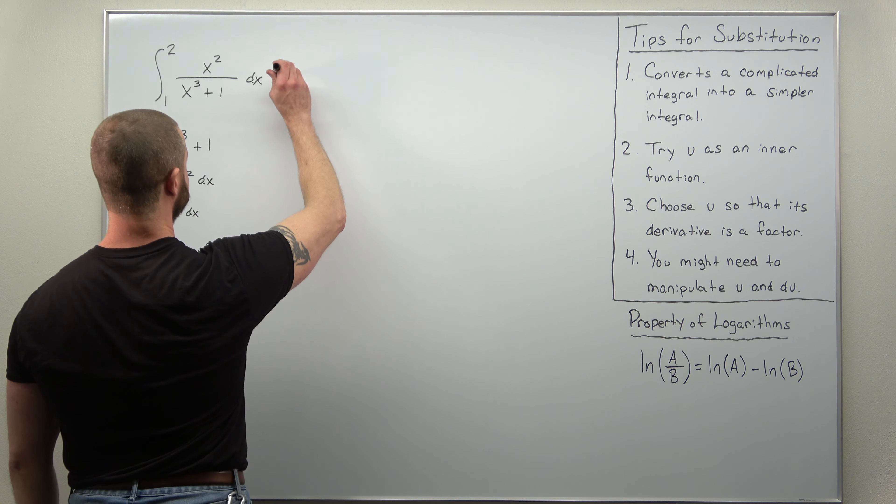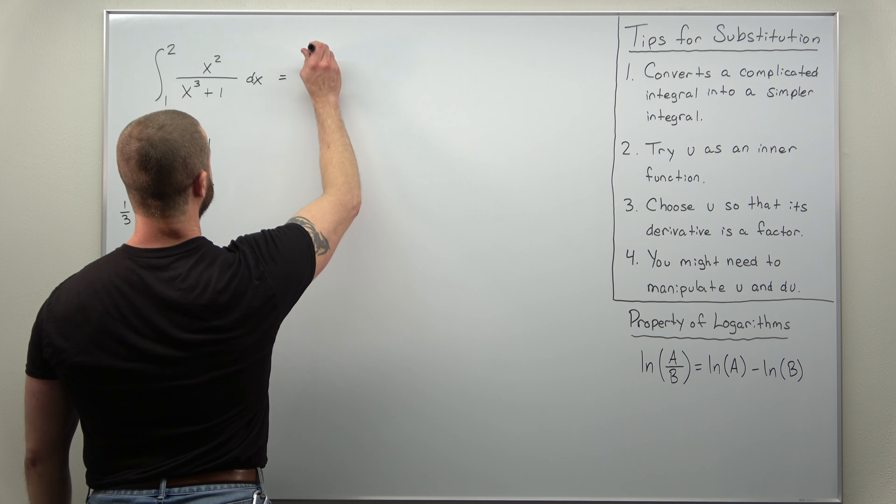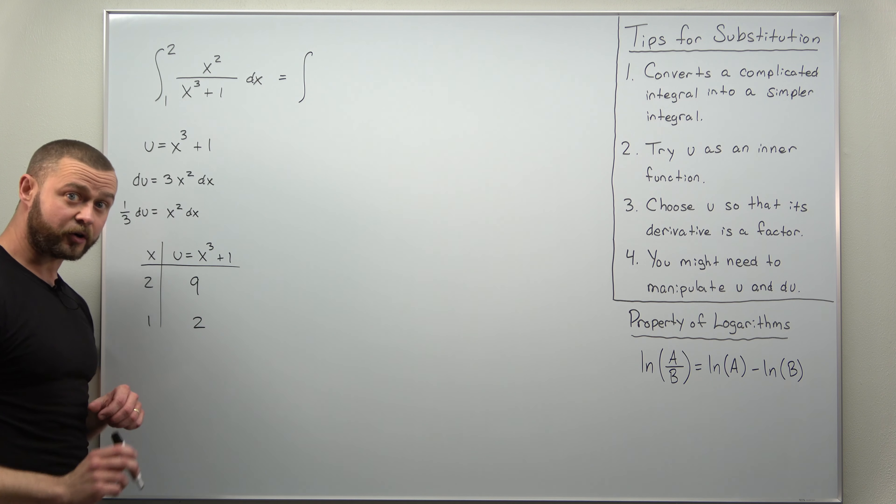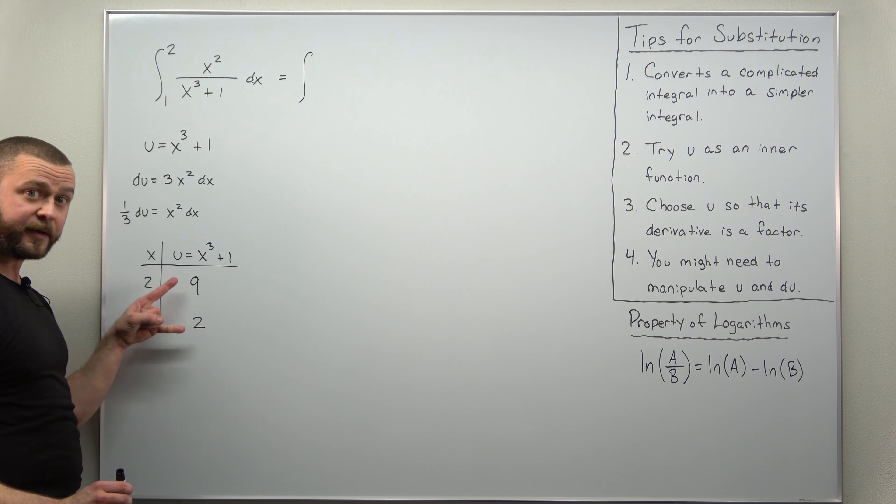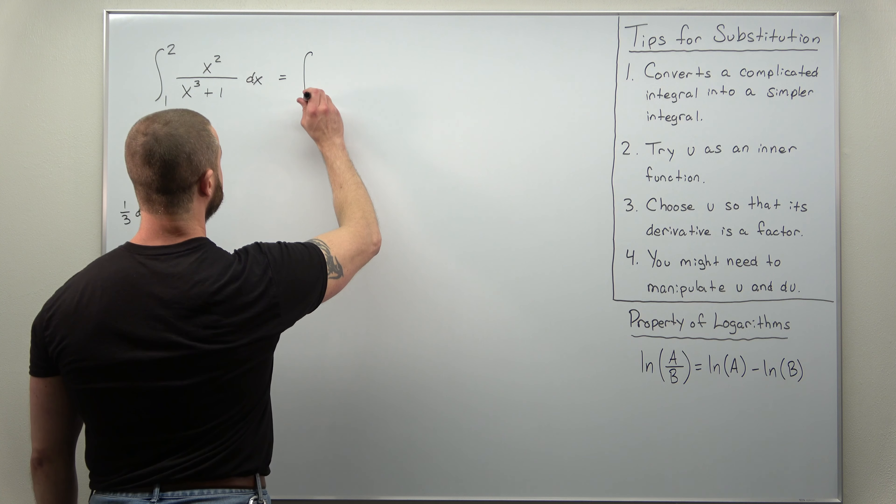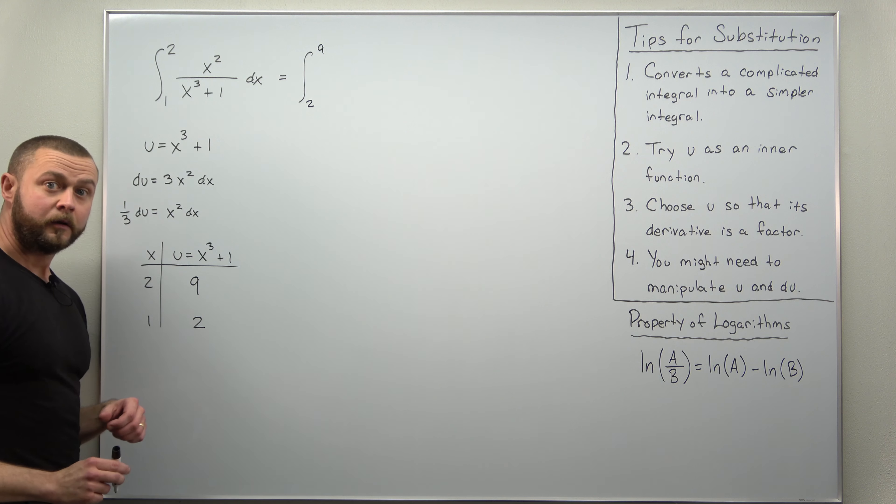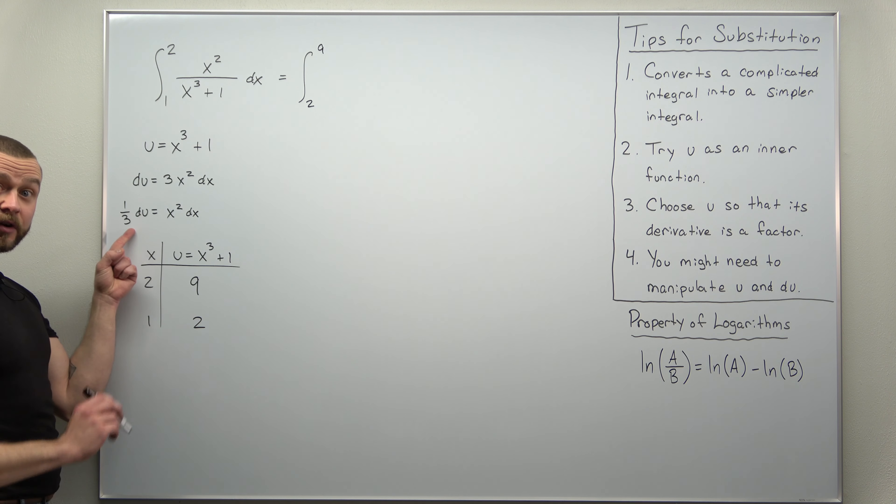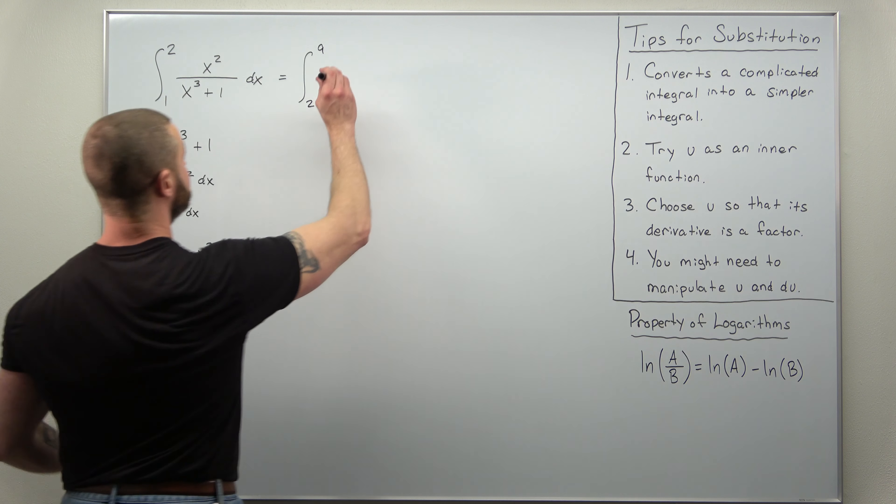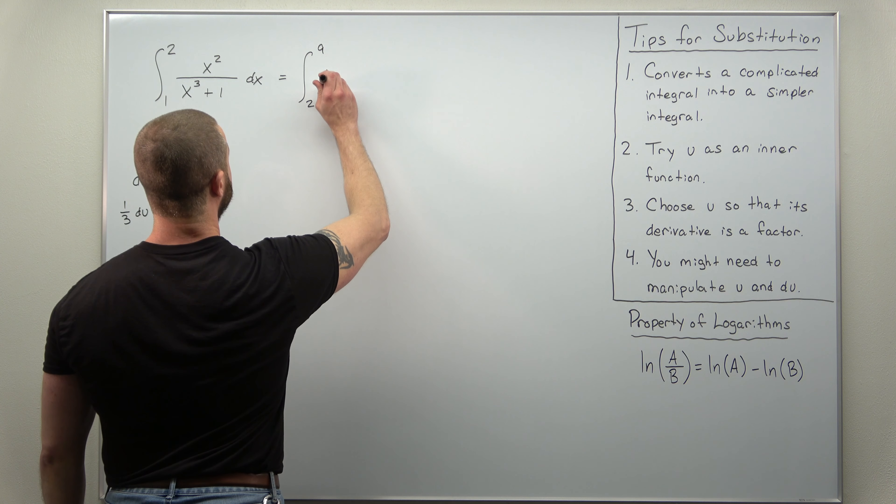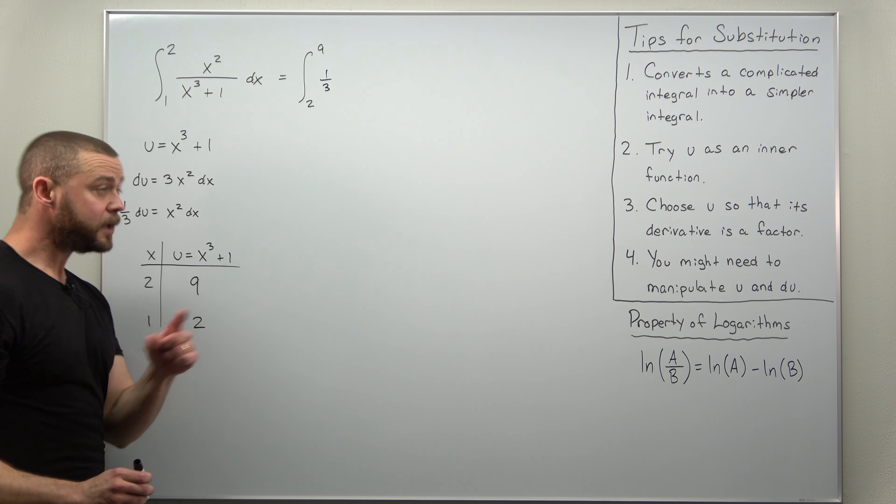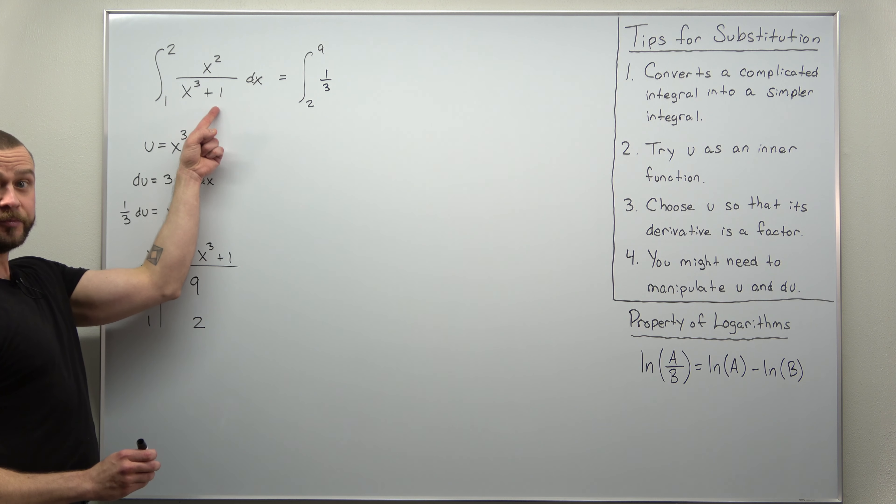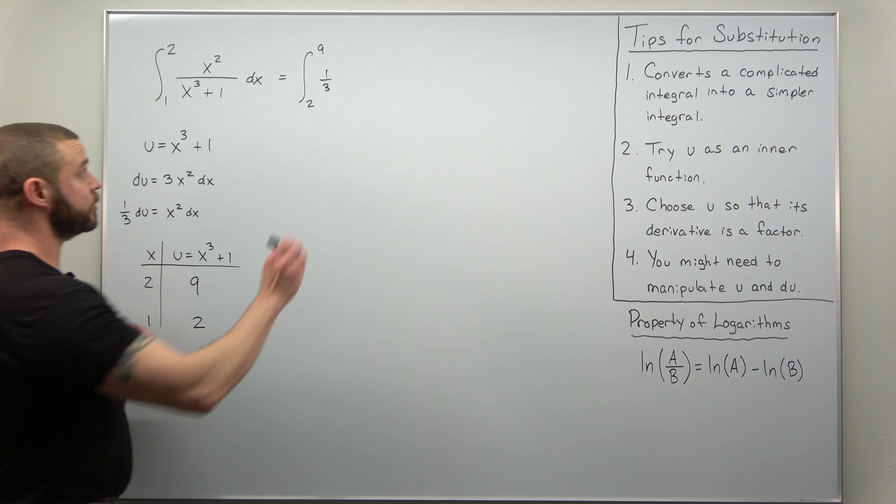Our integral here converts from x to now a u integral. We're using our new limits 2 to 9. Alright x squared dx. That gives us a factor of 1 third du. And notice we have 1 over x cubed plus 1 which we can write as 1 over u.